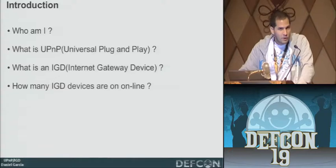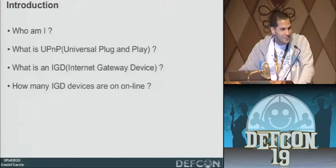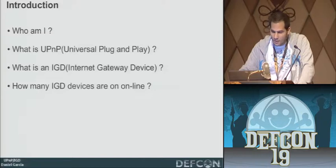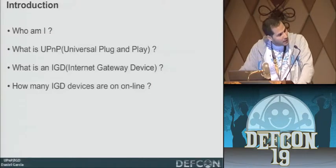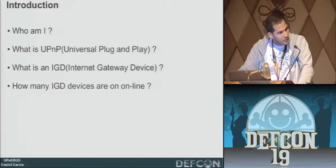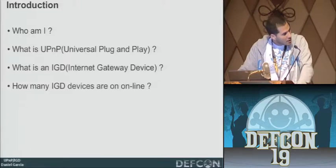Making devices work seamlessly is a good idea, but not very plausible. We're going to talk specifically about IGDs — the part of UPnP that works with networking devices. To make network devices work seamlessly, you need NAT traversal.